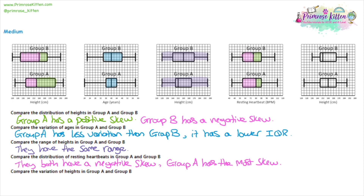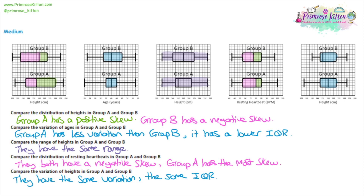Moving on to question five, looking at variation again — the interquartile range and relative widths of each box. In this question, the lower quartile and upper quartile of both groups appear to be in exactly the same position, so they both have the same variation — the same interquartile range. If you're unsure, look at the numbers and calculate it properly. However, group B is dramatically skewed to the positive side, whereas group A has a more even skew.